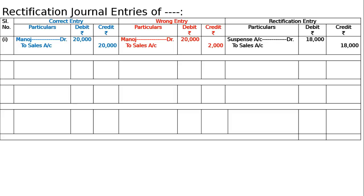If we add the wrong entry and the rectifying entry — two sales of ₹18,000 — it will become sales ₹20,000 for Manoj. The suspense account will go to a separate account.